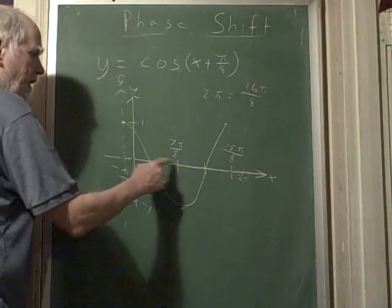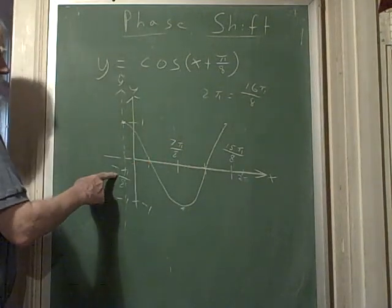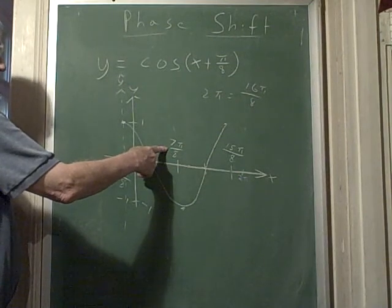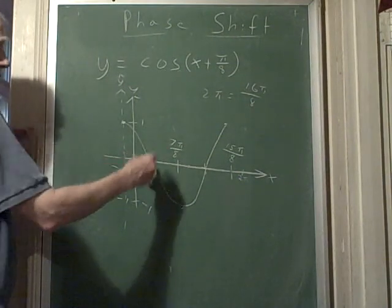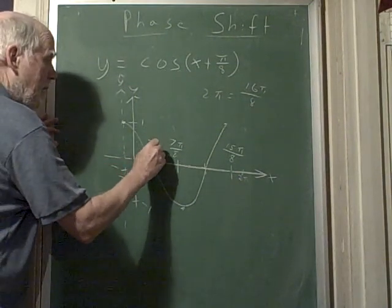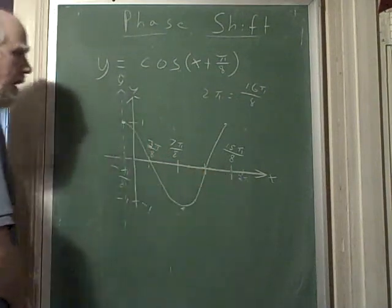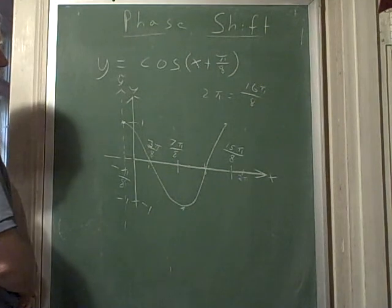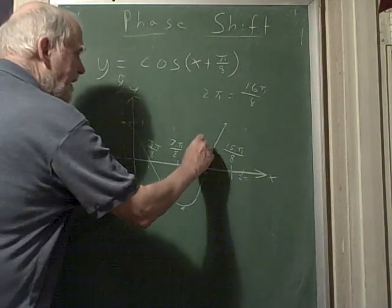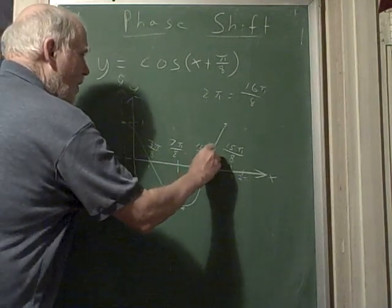If you wanted to find this midpoint, you would take negative pi over 8, add it to 7, and you'd get 6 pi over 8. Half of that is 3 pi over 8. Same here. I take 7, and I add that, and I get 22 pi over 8. This is 11 pi over 8.